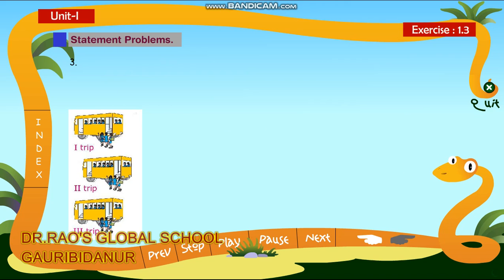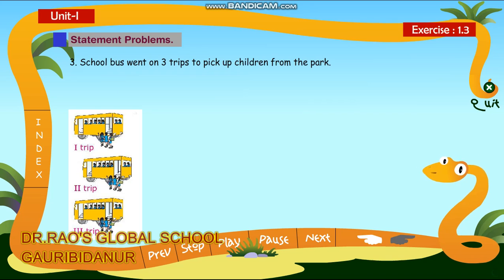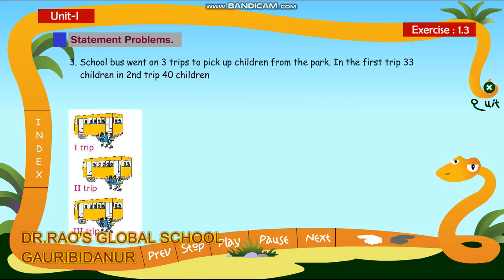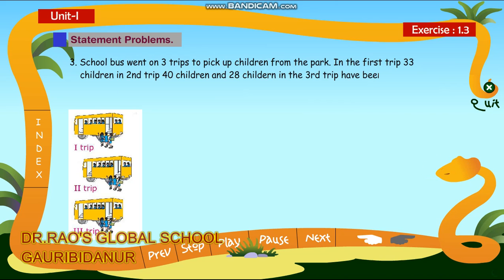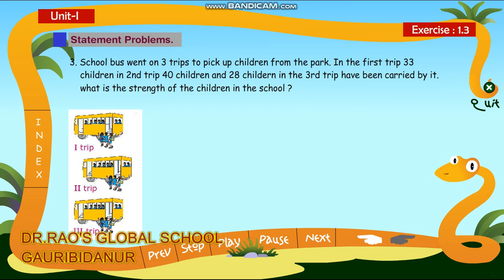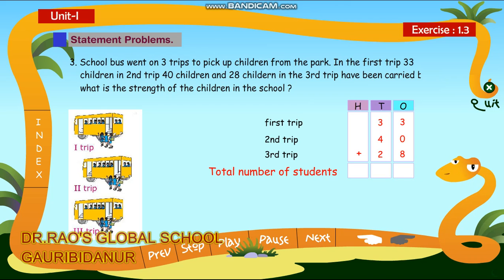3. A school bus went on 3 trips to pick up children from the park. In the first trip, 33 children; in the second trip, 40 children; and 28 children in the third trip were carried by it. What is the strength of the children in the school? Total number of students: 101.